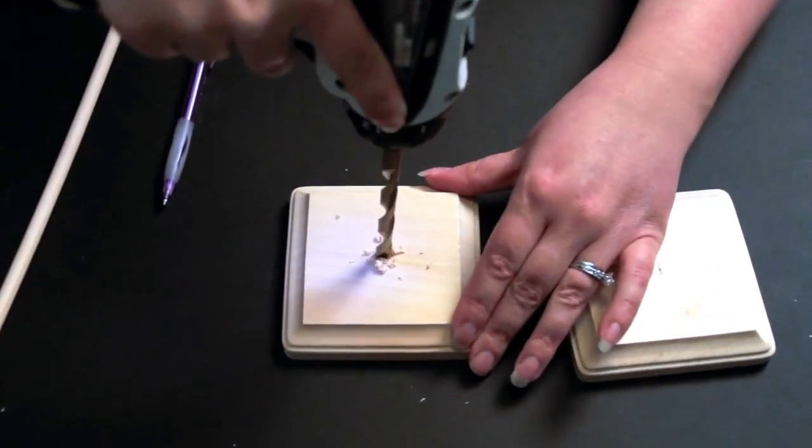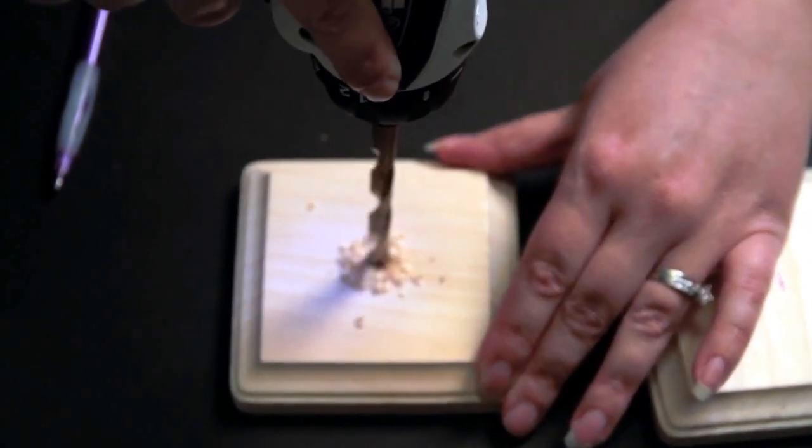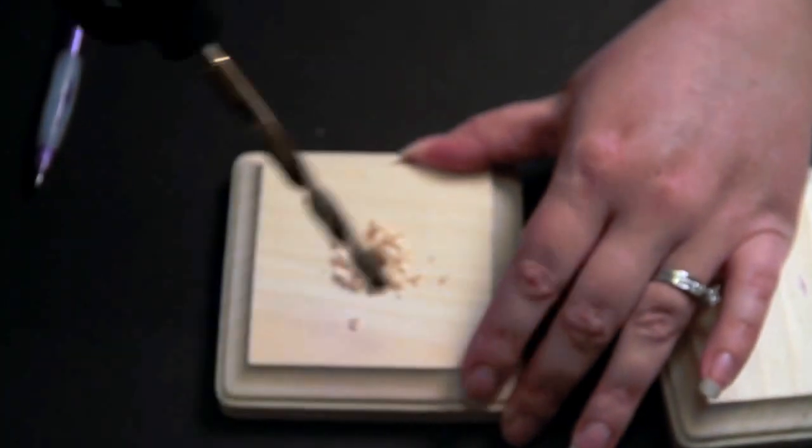When you're drilling your hole, you want to make sure that you go straight up and down the best that you can so that your dowel will sit straight up and down.